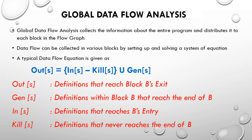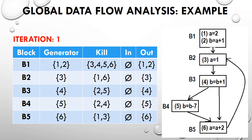Now there is a control flow graph given on the right hand side, where the rectangles represent the basic blocks and the directed edges represent control flow. A total of five blocks are there, numbered b1, b2, b3, b4, and b5. Inside b1 there are two statements numbered 1 and 2. Inside b2 we have statement 3, b3 has statement 4, b4 has statement 5, and b5 has statement 6.